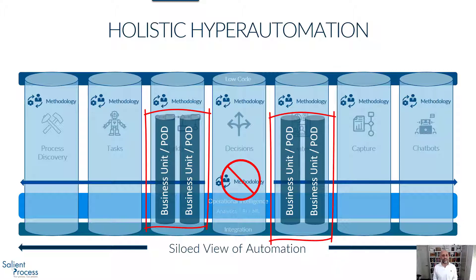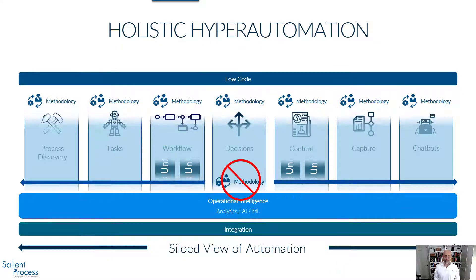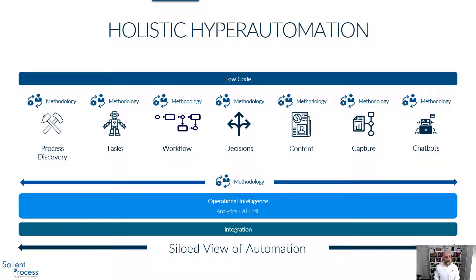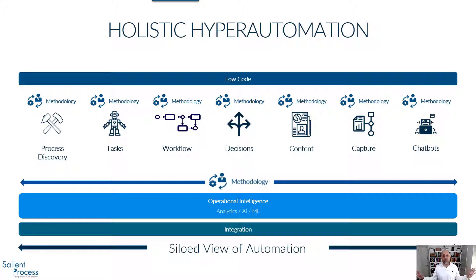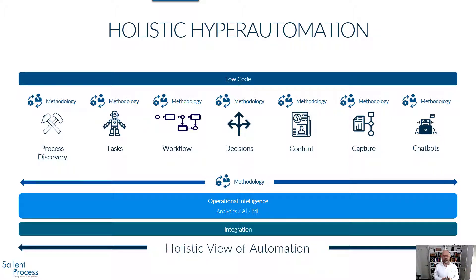So what is the answer to this challenge? We need a holistic approach to hyperautomation, which effectively means looking across the spectrum of automation and not being stuck in our silos. We still need capability-specific methodologies, but we also need an overarching methodology across automation. We need to remove the barriers between the functional areas of automation and make sure automation is being looked at as an overarching effort rather than a myopic approach.